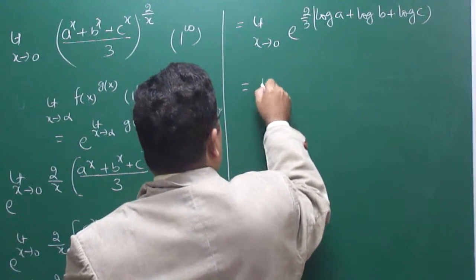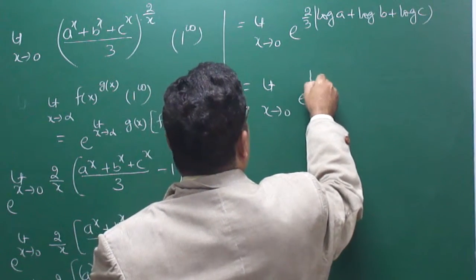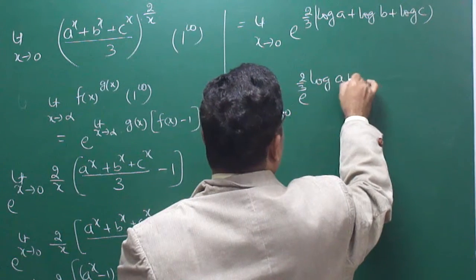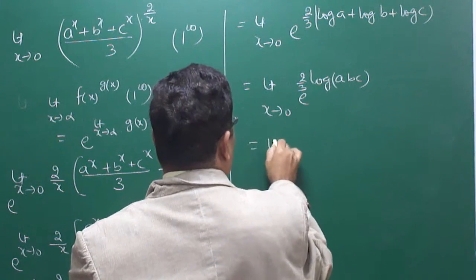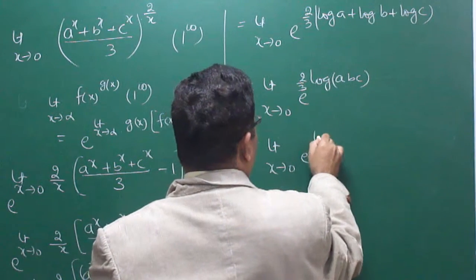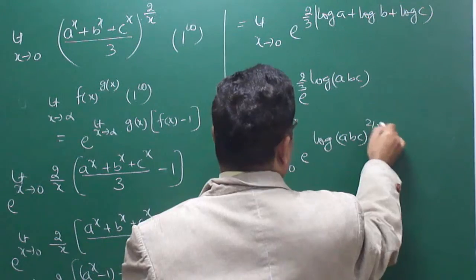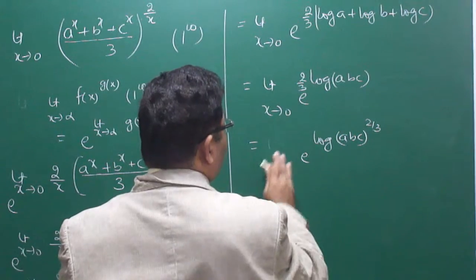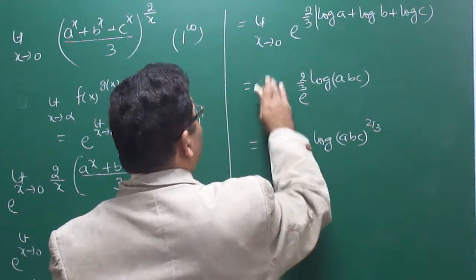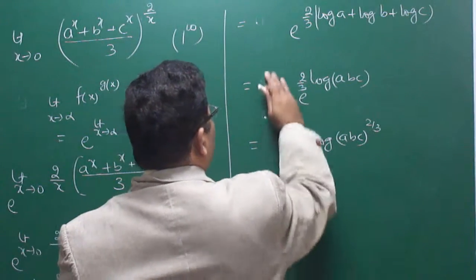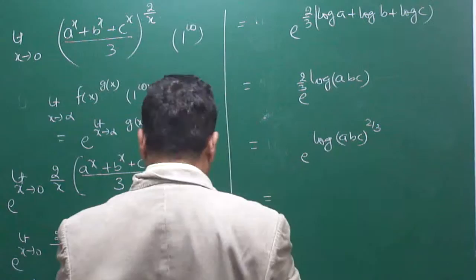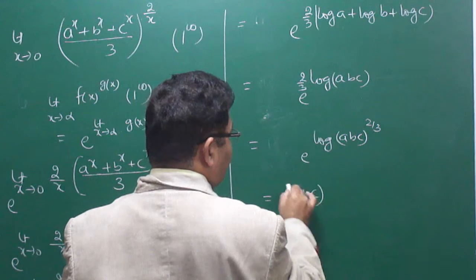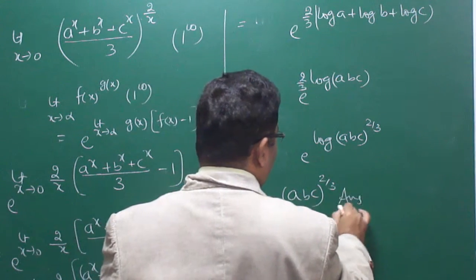Since log a + log b + log c = log(abc), the exponent becomes (2/3)·log(abc) = log(abc)^(2/3). Therefore the answer is e to the power log(abc)^(2/3), and since e^(log h) = h, the final answer is (abc)^(2/3).